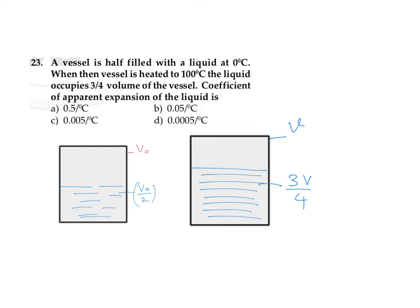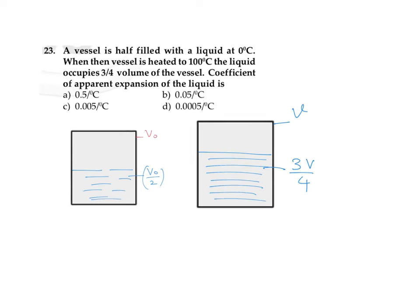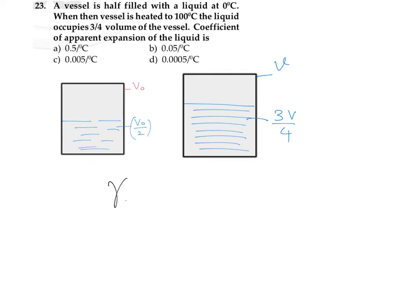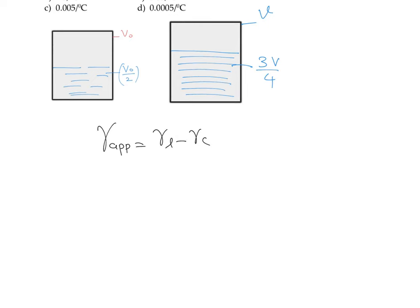We need to find the coefficient of apparent expansion. We know that gamma apparent equals gamma of liquid minus gamma of container. This can be expressed as the change in volume of liquid minus the change in volume of container, representing the apparent volume expansion.